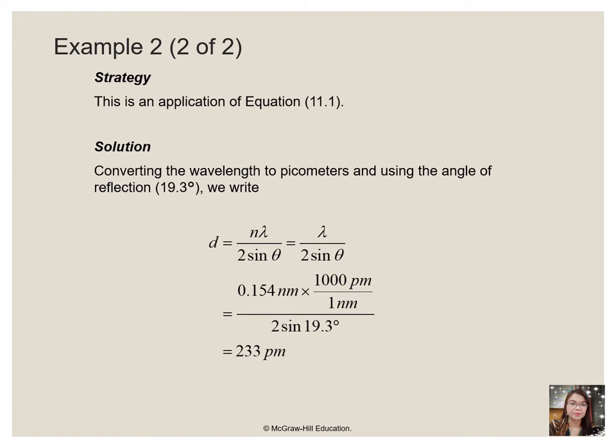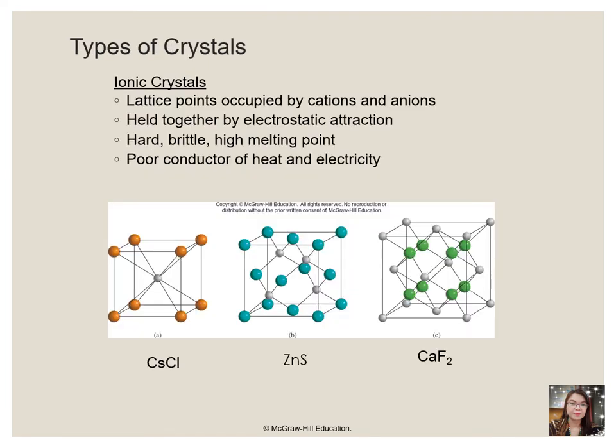From the second slide, it shows the computations arriving at the same answer as what we got on the first part. These are the different types of crystals. We have ionic crystals — particular examples are cesium chloride, zinc sulfide, and calcium fluoride. These have lattice points occupied by cations and anions, held together by electrostatic attraction. They are hard, brittle, high melting point, but poor conductors of heat and electricity.